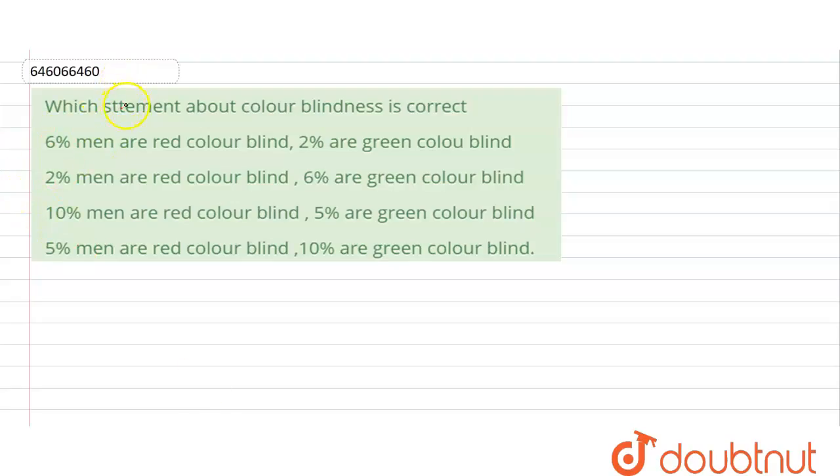Which statement regarding color blindness is true? Let's see the first one: six percent men are red color blind, two percent are green color blind.